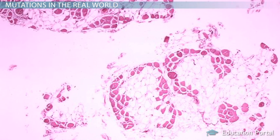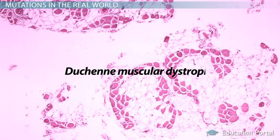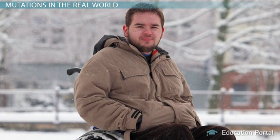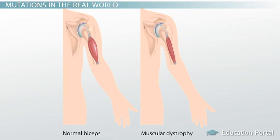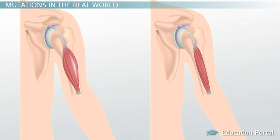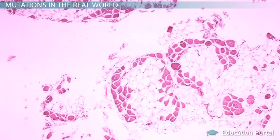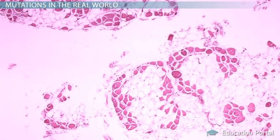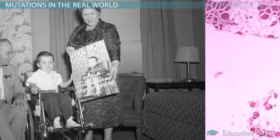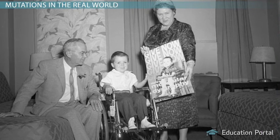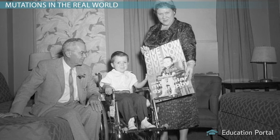One disorder caused by a nonsense mutation is Duchenne muscular dystrophy, also called DMD. Patients with DMD suffer from severe muscular weakness that gets worse over time. They have a nonsense mutation in the dystrophin gene, which codes for the protein dystrophin — a structural protein that helps make up our muscle tissue. When someone has a nonsense mutation in the dystrophin gene, their muscles can't develop correctly, and they have trouble with walking and other important motor skills.